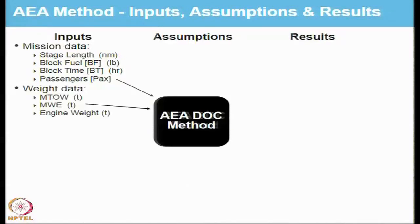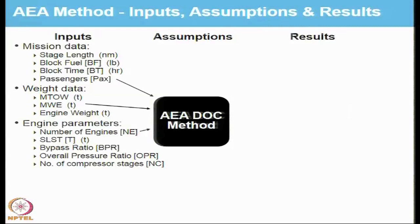With the mission data, you also have to provide the weight data: the maximum takeoff weight of the aircraft and the engine weight in tons. MW stands for the empty weight of the aircraft. Then you have engine parameters like the number of engines, the sea level static thrust of each engine, the bypass ratio, the overall pressure ratio, and the number of compressor stages.